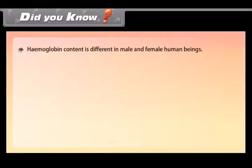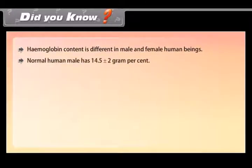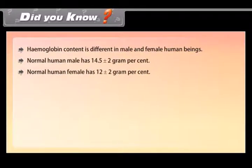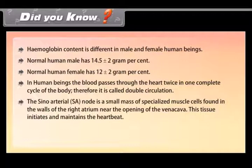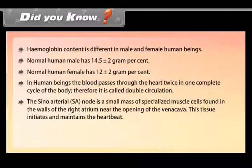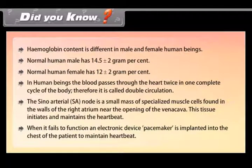Did you know? Hemoglobin content differs between males and females: normal human males have 14.5 ± 2 g%, and normal human females have 12 ± 2 g%. In human beings, blood passes through the heart twice in one complete cycle of the body, which is why it is called double circulation. The sino-atrial (SA) node is a small mass of specialized muscle cells found in the walls of the right atrium near the opening of the vena cava. This tissue initiates and maintains the heartbeat. When it fails to function, an electronic device called a pacemaker is implanted into the chest of the patient to maintain heartbeat.